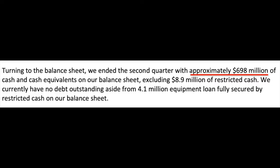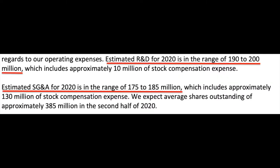Approximately on their balance sheet they have 698 million minus 8.9 million of restricted cash, and their projected cash burn estimated R&D for 2020 is in the range of 190 to 200 million and estimated SG&A for 2020 is in the range of 175 to 185 million.